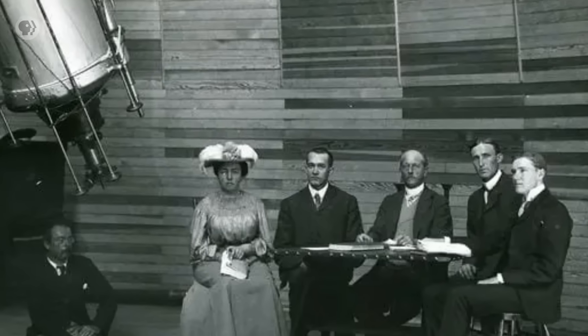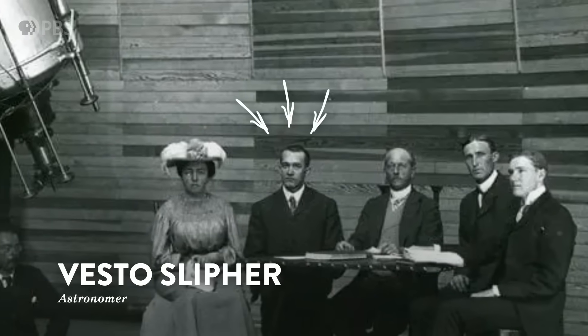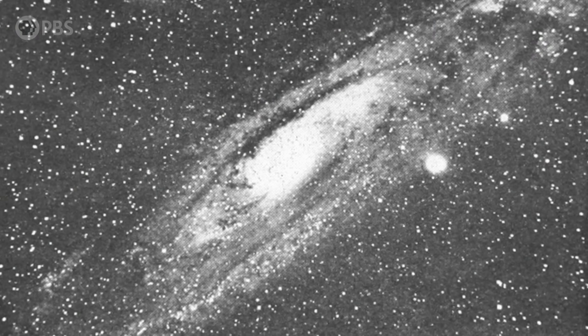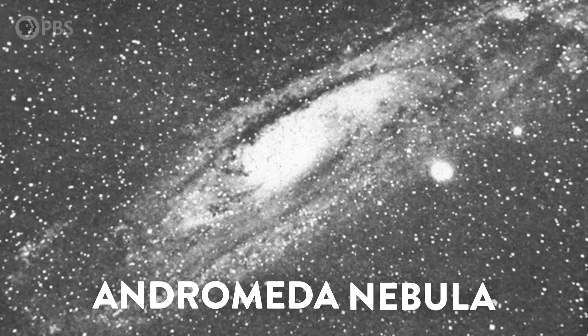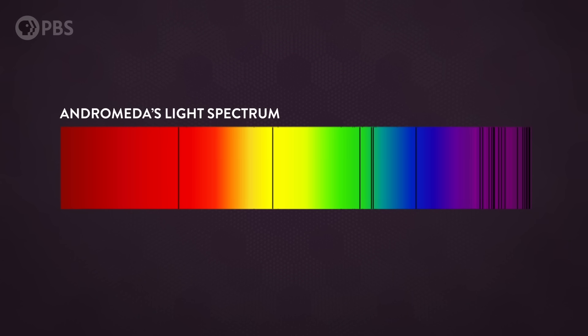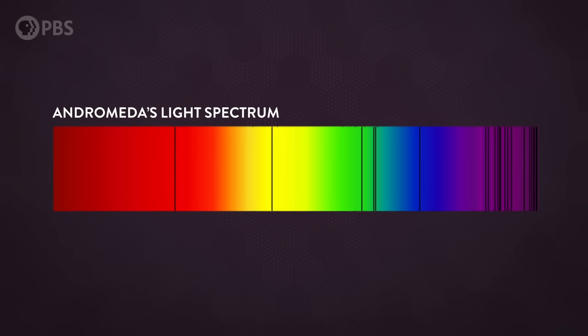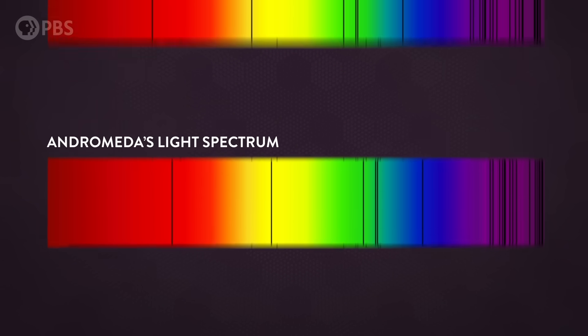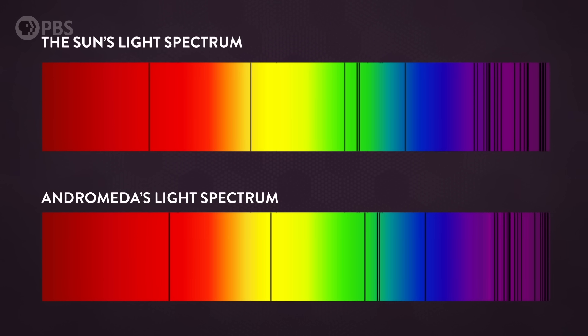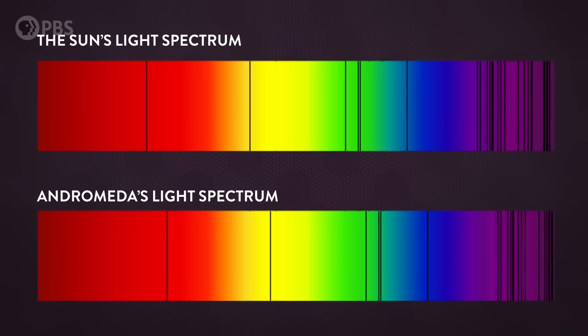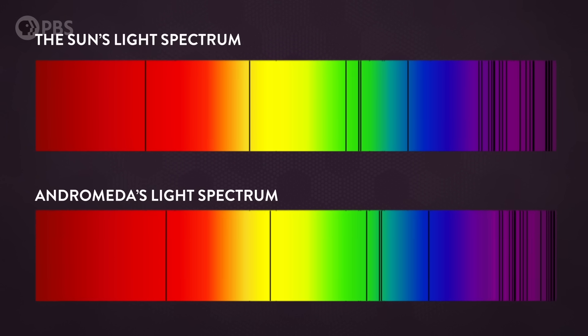For instance, back in 1912, the American astronomer Vesto Slipher was studying the spectrum of a fuzzy little spot in the sky that he called the Andromeda Nebula. It was an absorption spectrum and it had a bunch of the same dark lines Fraunhofer had seen in our sun's spectrum. But the weird thing was they weren't quite in the right place. They were all shifted toward the blue end of the spectrum.